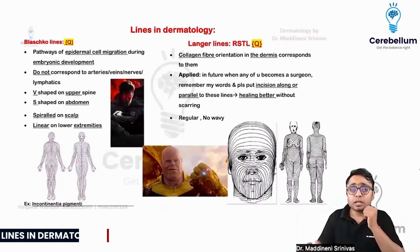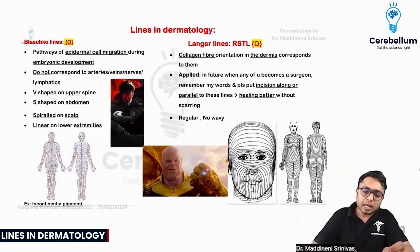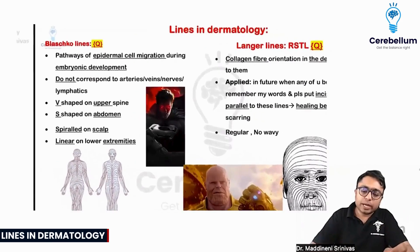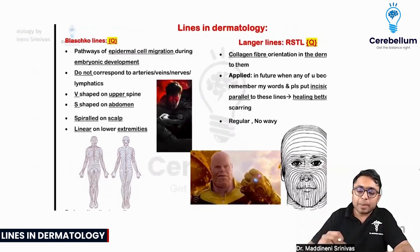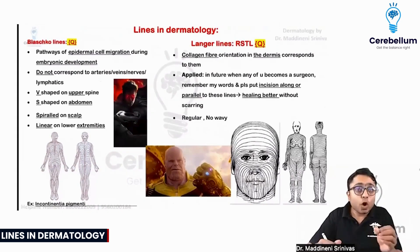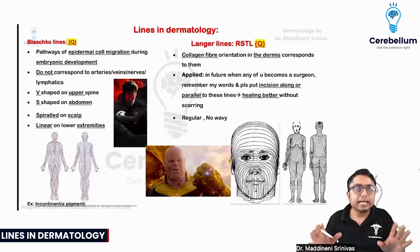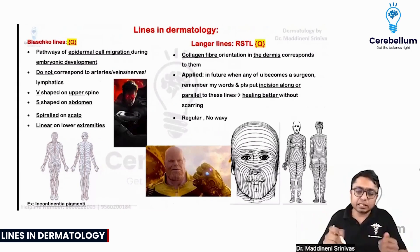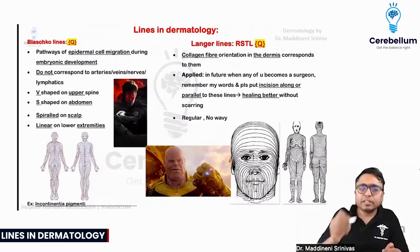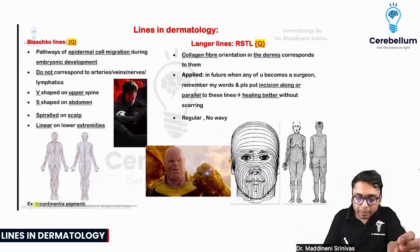Now coming to the lines which were asked in the INICET and are also a hot favorite of the exam. First let us look at Blashko's lines. These are basically lines which are not going to be seen on anybody's skin normally — they are only going to become apparent in disease conditions. The disease you must remember related to Blashko's lines is incontinentia pigmenti.